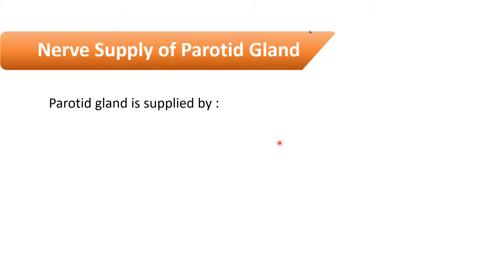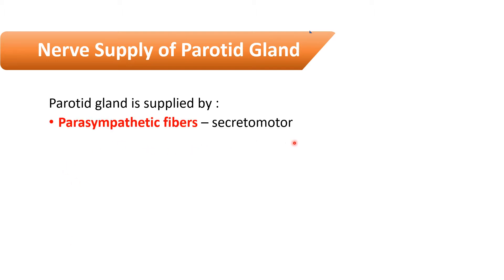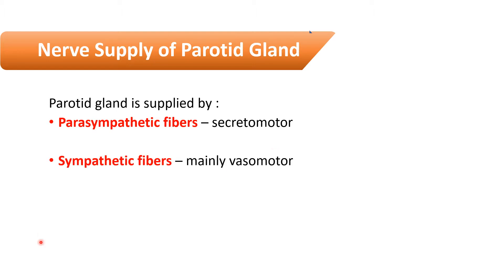The parotid gland is supplied by three types of nerve fibers. First, parasympathetic fibers, which are secretomotor in nature — they are responsible for secretion of saliva from the parotid gland. Next, sympathetic fibers, which also provide innervation to the secretory units but are mainly vasomotor, supplying the smooth muscles of the blood vessels supplying the parotid gland.